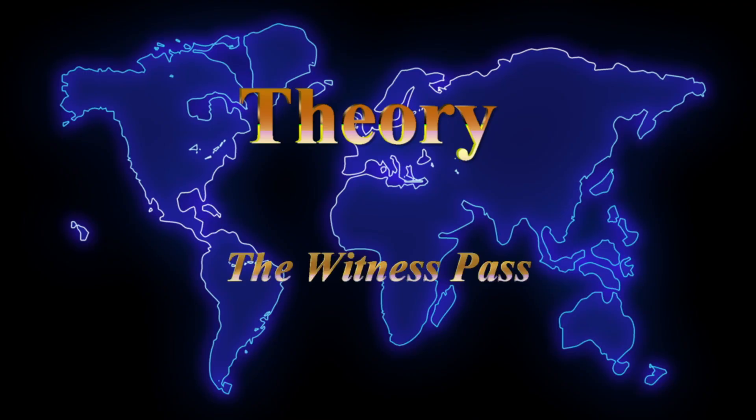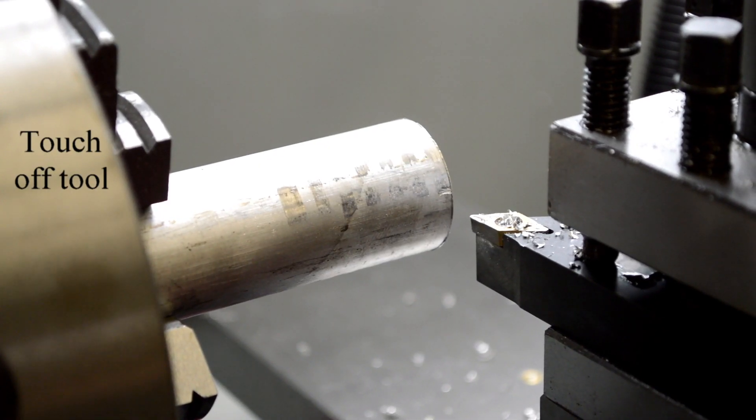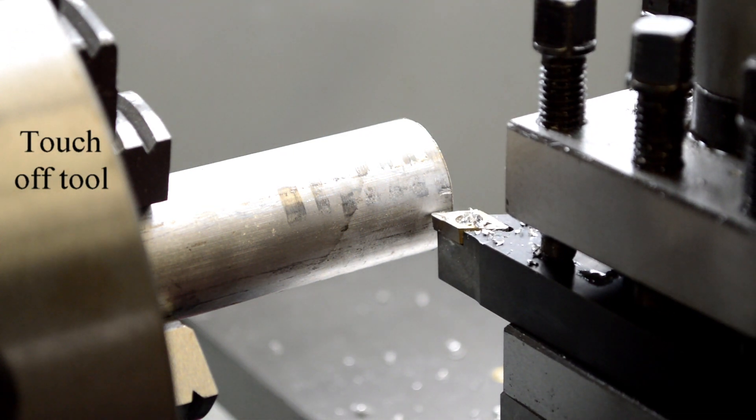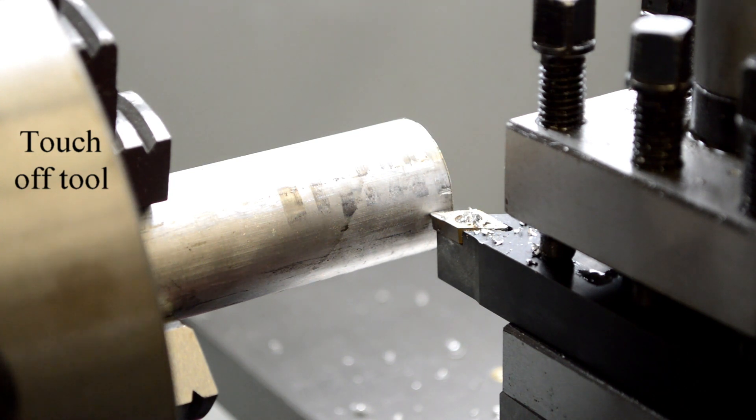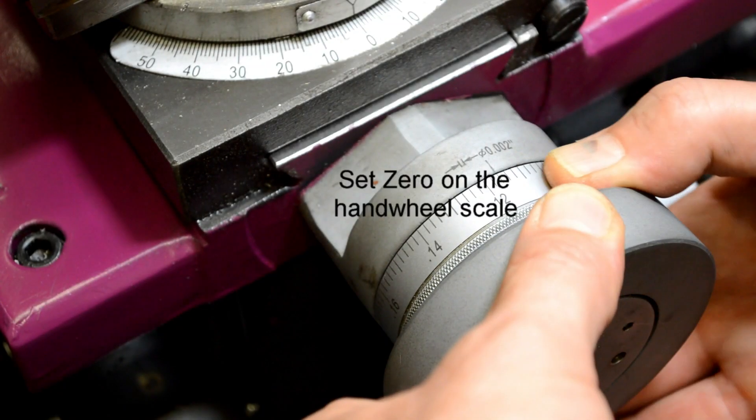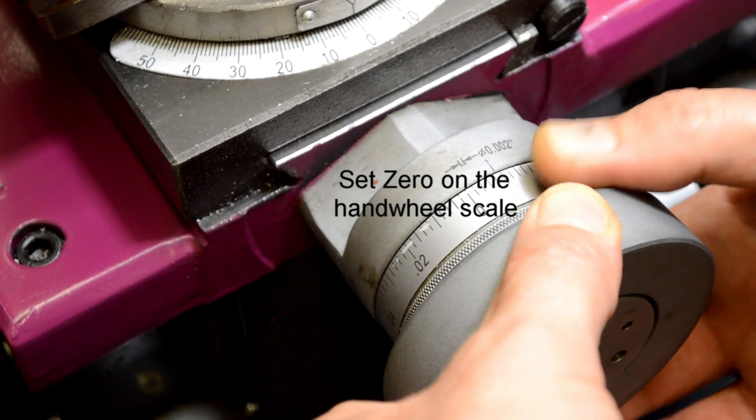This is a video about the witness pass. The witness pass is a rough pass used to establish a baseline dimension. And the first thing we want to do is to touch off the tool without starting the spindle. So I'll move in and gently touch the edge of the tool. And I'm going to use that to set a zero on the hand wheel. And now without moving the tool, I'm going to set it to zero.